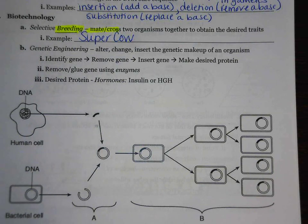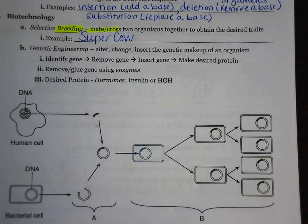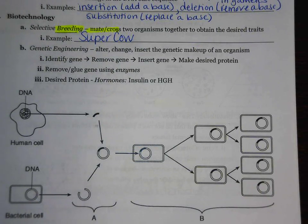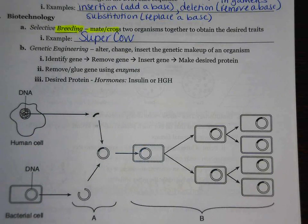We watched a video on the super cow. The super cow was when they were trying to find the most muscular cow and make it mate with another muscular cow. The desired outcome was that the offspring would also have big muscles so that they could find the leanest meat and sell it.